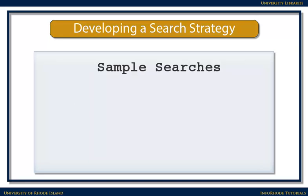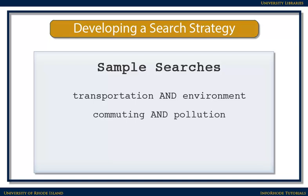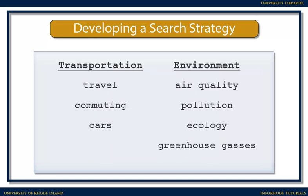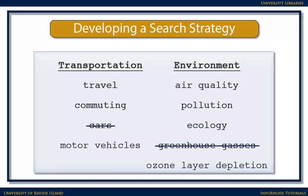You can use these terms and synonyms to create some sample searches for your topic. These include transportation and environment, commuting and pollution, travel and greenhouse gases, or transportation and air quality. It's important to think of the language that good sources would use to describe your topic. An appropriate source for college-level research would likely use technical or sophisticated terms — for example, motor vehicles rather than cars, and ozone layer depletion rather than greenhouse gases.